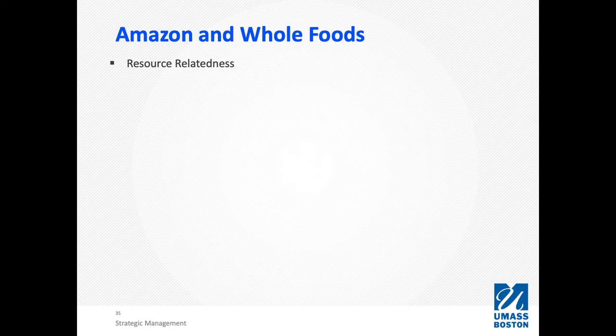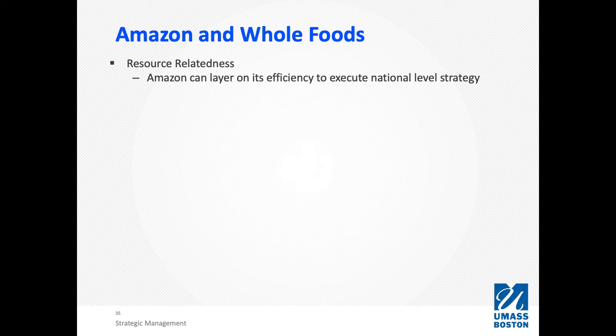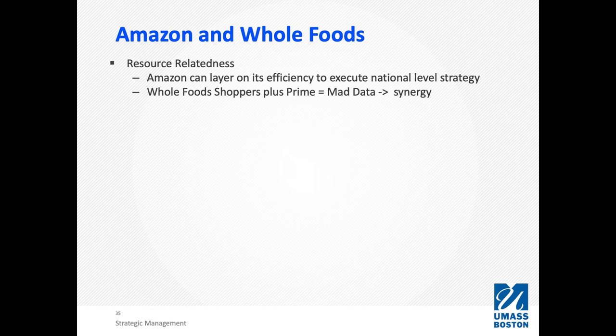That was actually pretty interesting — it informed several things mentioned earlier. There's definitely some resource relatedness here. Amazon can layer its efficiency to execute a national-level strategy — the centralized merchandising and other things Amazon was doing represent benefits of scope economies. Because Amazon already has that infrastructure, they can apply their ability to execute national strategy across more spaces. Another thing is resource relatedness around data: Amazon food shoppers plus Prime equals a massive amount of data — that's literally synergistic. Amazon can track everything customers are doing, and that treasure trove of data can be very useful in marketing and targeting.